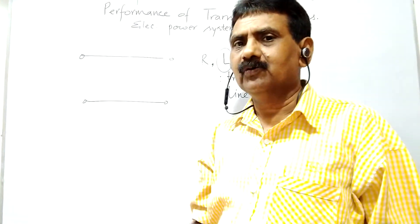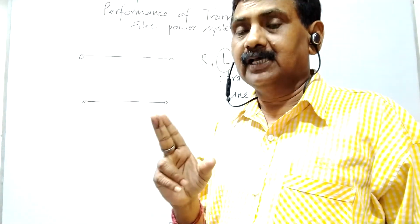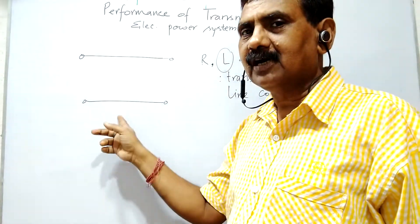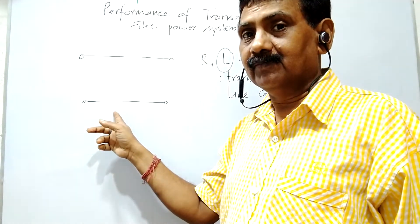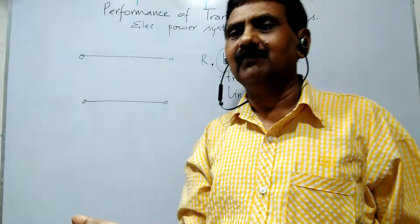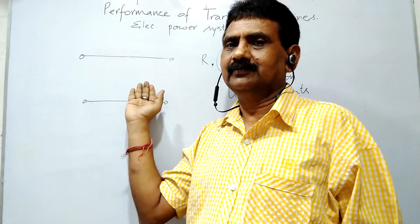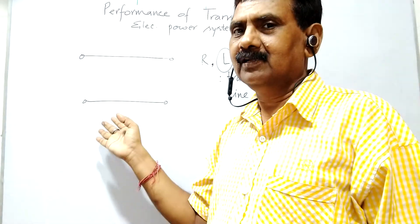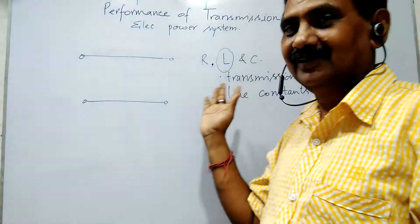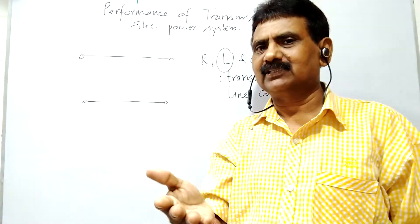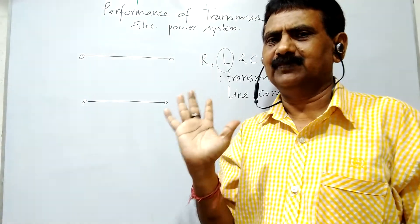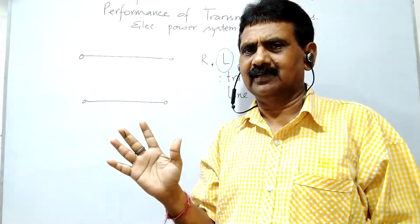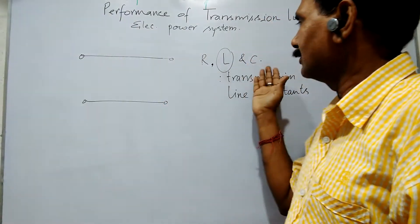All of you know that capacitance forms when there is an insulator between two conductors. These are conducting wires, and when there is an insulator in between two conductors, that will form a capacitance. So these three things — R, L, and C — are the transmission line constants.